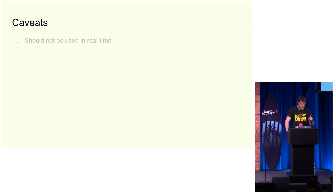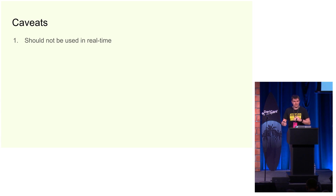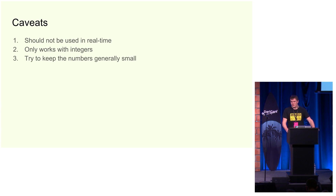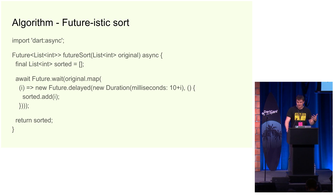So we have some caveats. First, you shouldn't do this in real time. Futures are asynchronous, so we don't care — the user shouldn't be waiting on it for the app to respond or anything, so just put it in the background and let it happen. Second, I only designed this to work for integers. We could change that, but right now it's just simple. And try to keep them generally small — anything that gets into the many tens of thousands will probably not be very useful.